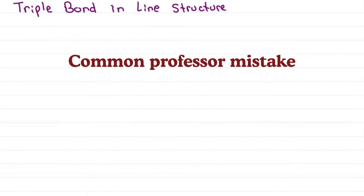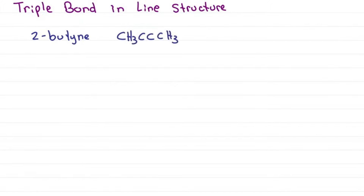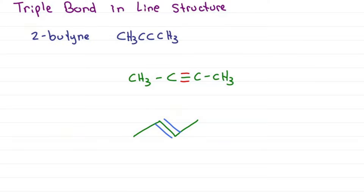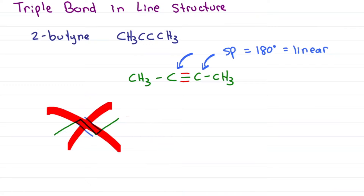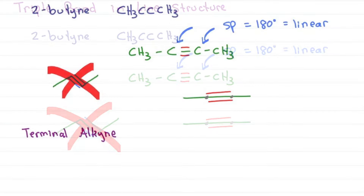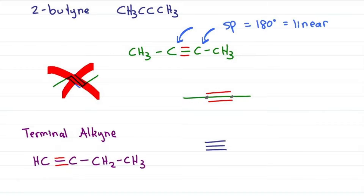Triple bonds is where things get tricky. For something like 2-butyne, notice there are no hydrogens, which means we have a triple bond. Many professors draw this the same way as an alkene but add two lines for the triple bond — this is wrong! SP hybridized carbons are 180 degrees, meaning the bond should be linear. To draw an internal alkyne, you draw a straight line and then add the extra lines for the pi bonds in the middle. For a terminal alkyne ending with a triple bond, such as 1-butyne, one side extends to carbons 3 and 4, but since there is an invisible hydrogen, the structure just ends with a triple bond.